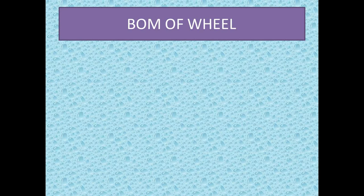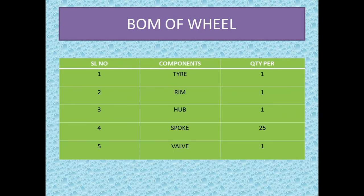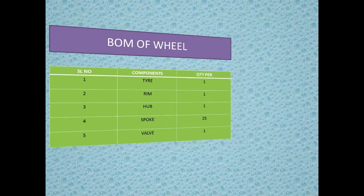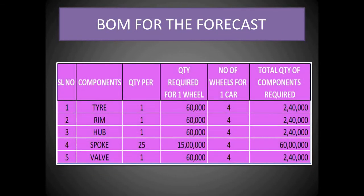We will see what is the Bill of Materials for a wheel. Wheel consists of tire, rim, hub, spoke, and valve. Quantity per indicates for preparation of one assembly of wheel, how much quantity is required. You can see here, for our forecast, I estimated around 60,000 cars to be produced, keeping 2,000 spare considering manufacturing losses.